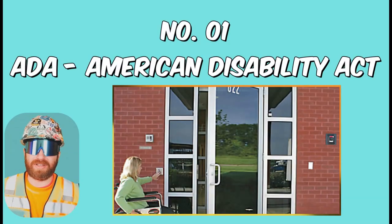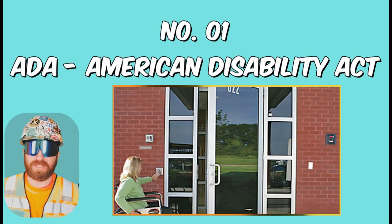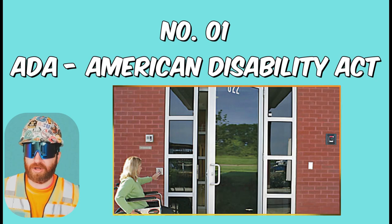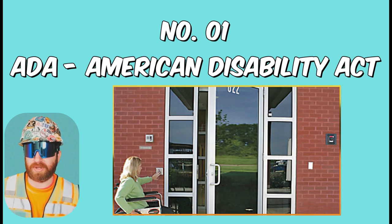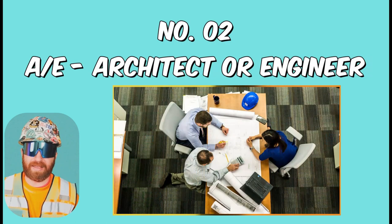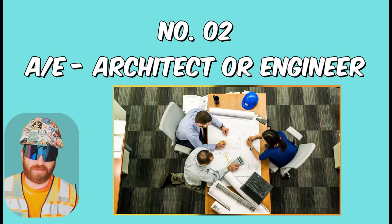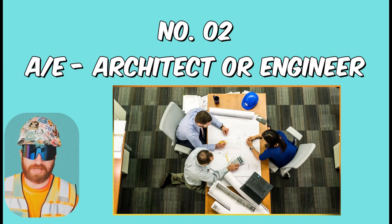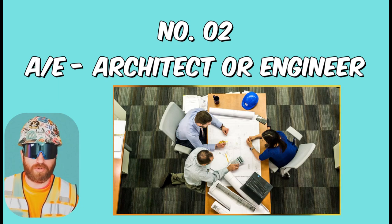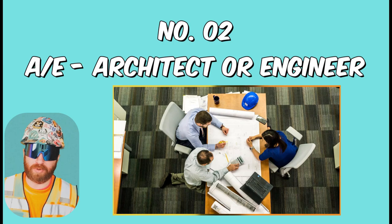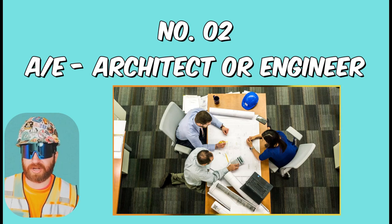ADA, American Disability Act. This set forth codes and standards for public use buildings to ensure design of those buildings meets certain accessibility requirements. AE, Architect Engineer. This is the firm or firms who put together the construction documents, usually referred to as the engineer and architect of record, and whose name appears on the building permit when it's issued for any particular project.